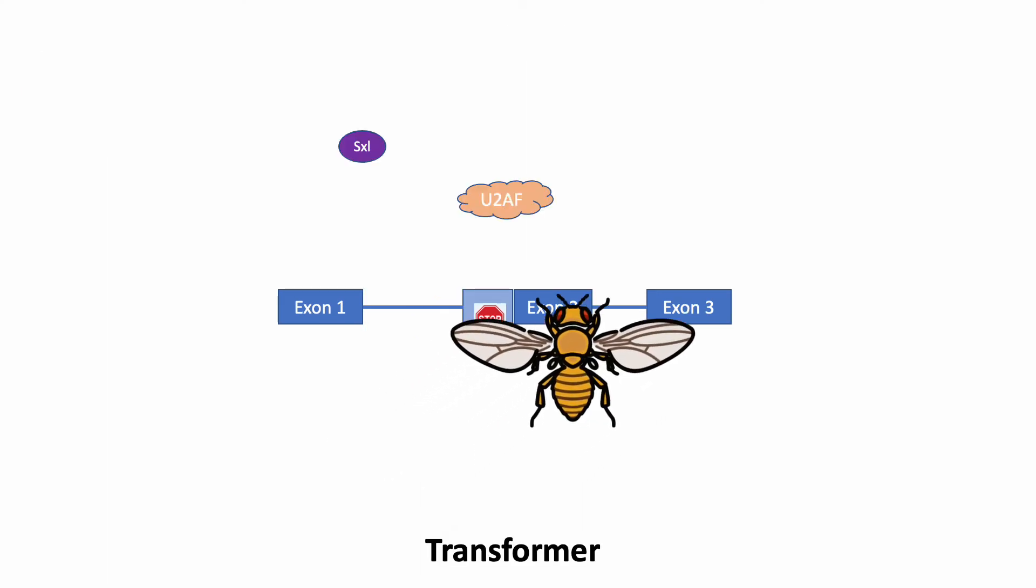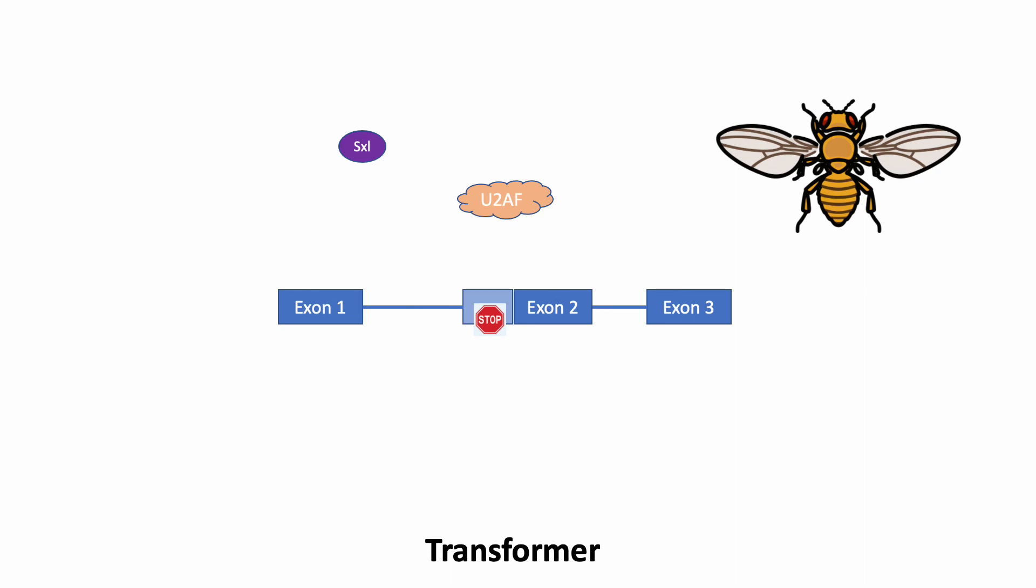In females, sex-lethal, which as you may recall is a repressor of splicing, binds to the polypyrimidine tract instead, which blocks U2AF from binding to that splice site. As a result, U2AF binds to and promotes the splicing at an alternative distal 3' splice site, which also promotes the skipping of the intron ahead of exon 2 that contains the premature stop codon, and thus encodes the full-length transformer protein in the females.